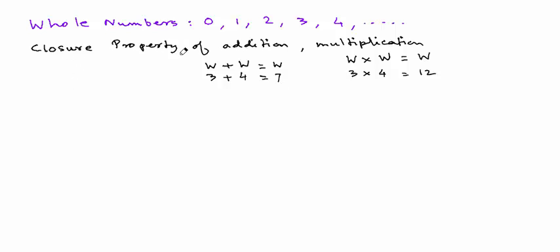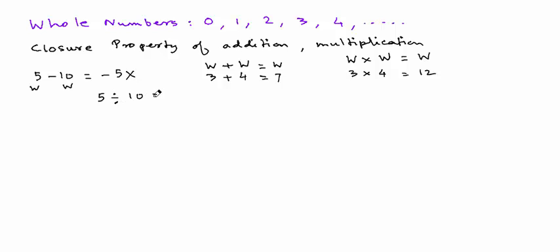We cannot say the closure property works for subtraction or even for division. For example, if you did 5 minus 10, that's negative 5. 5 is a whole number, 10 is a whole number, but negative 5 is not a whole number. Similarly, for division, 5 divided by 10 is one half, and one half is not a whole number. Therefore, we say the closure property works only for addition and multiplication.